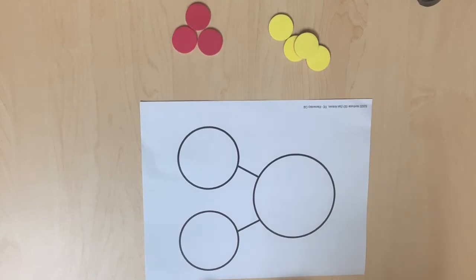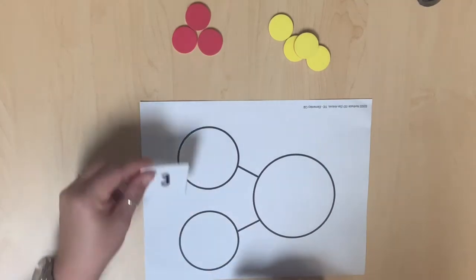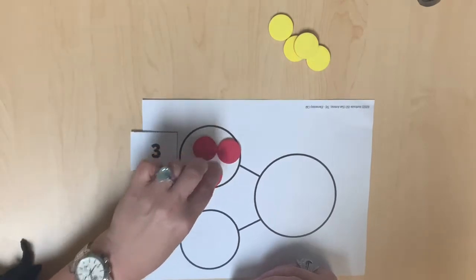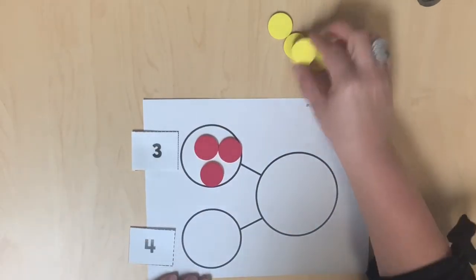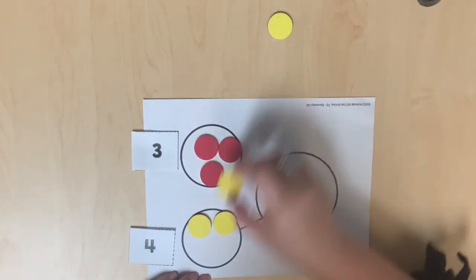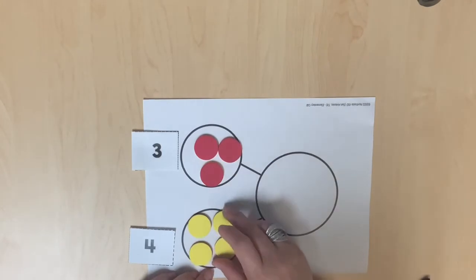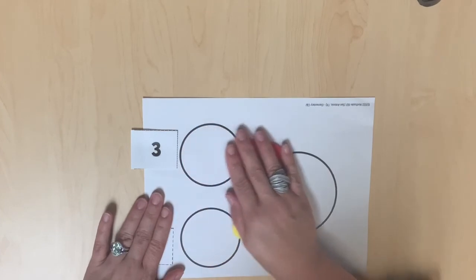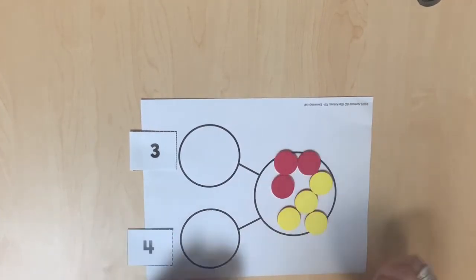How can a number be composed using a number bond? Three counters are in one part of the number bond. Four counters are in another part of the number bond. Say part, part, whole, or three and four make seven.